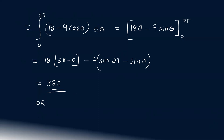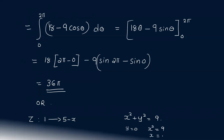This is an alternate Cartesian method. We set z from 1 to 5 minus x. For x² + y² = 9, setting y = 0 gives x = ±3, so x ranges from -3 to 3. Then y ranges from minus root of (9 minus x²) to root of (9 minus x²), giving y = ±√(9 - x²).